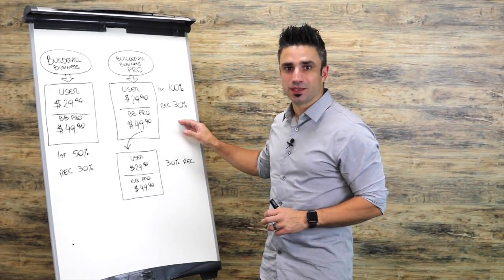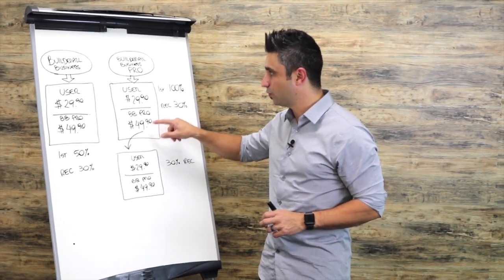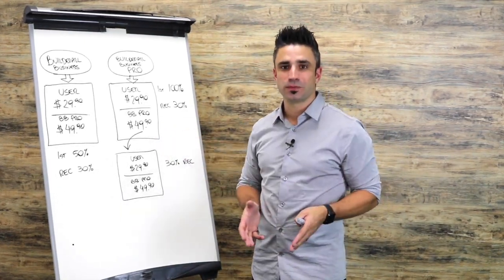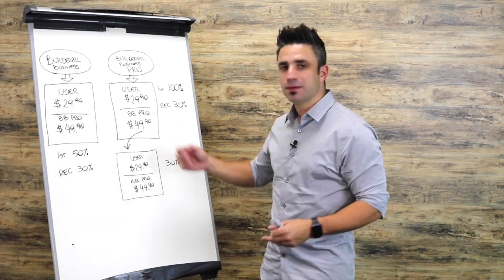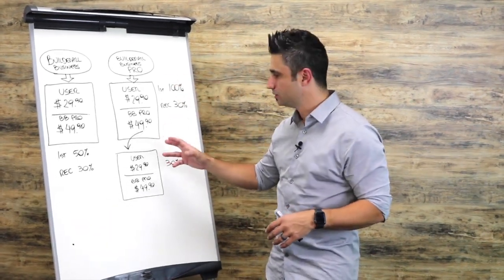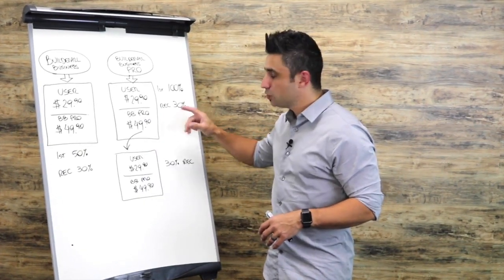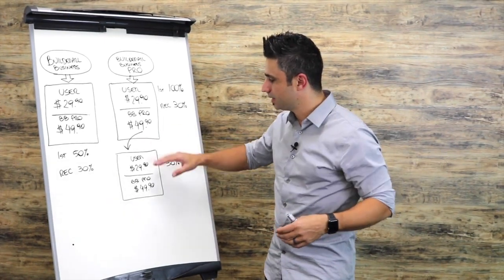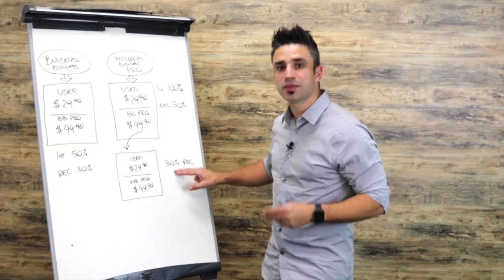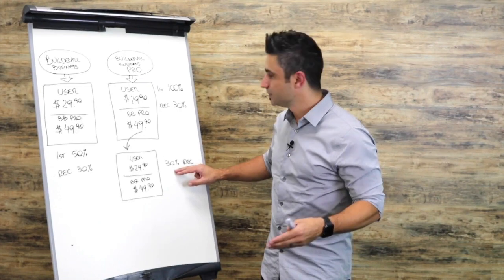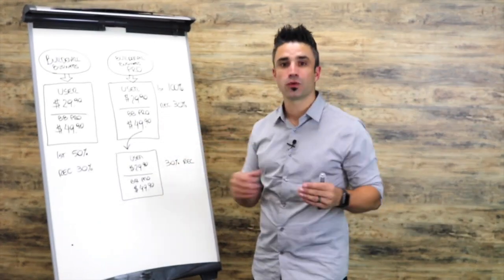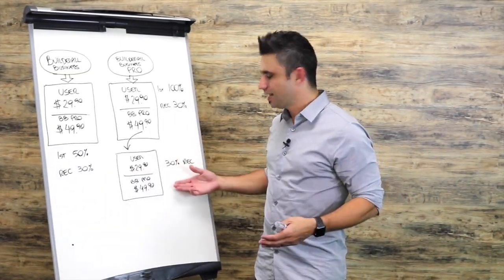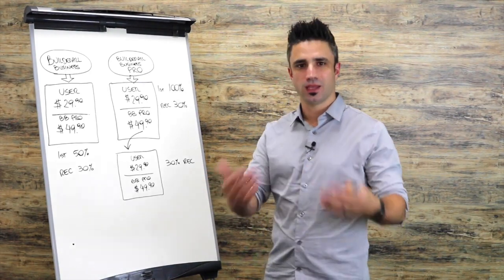It doesn't stop there — the people that converted at $49.90 for the Builderall Business Pro are serious about their business, so they're going to go out and promote it. Anytime they promote, they earn their commissions — the 100% and 30%. But you also earn 30% recurring commissions from the second month on. Anytime they make a sale at the $29.90, after the second month, you earn 30% commissions of those sales. Now you have somebody you're working alongside — the Builderall Business Pro members are sort of your partners, because you earn 30% commissions of their sales.